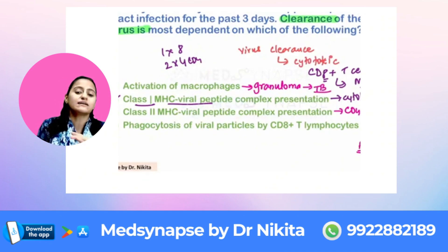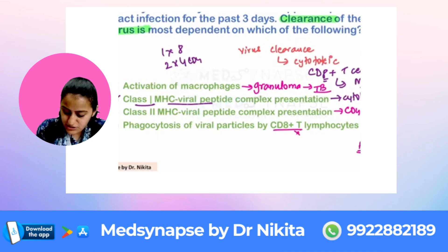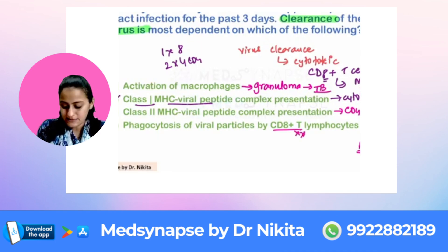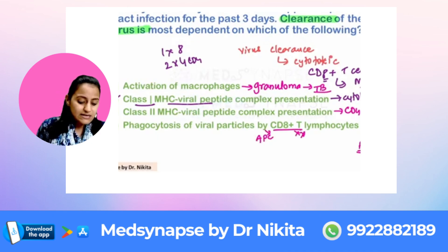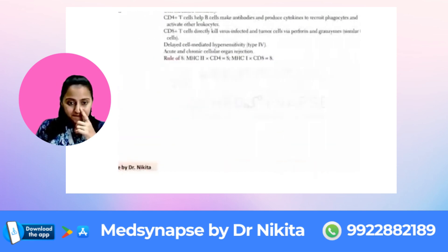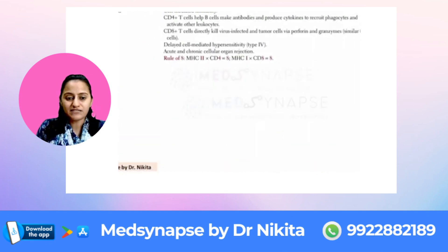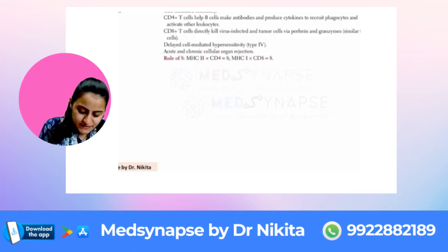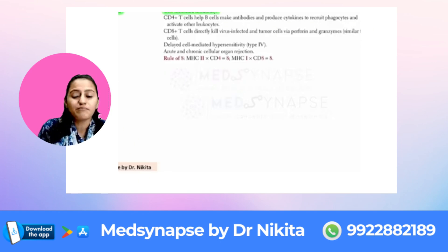Phagocytosis of the viral particles is not done by CD8-positive T lymphocytes — it is done by the antigen-presenting cells. So a quick snippet from First Aid, like we have in the fast five quizzes: T cells are cell-mediated immunity, B cells are humoral immunity.